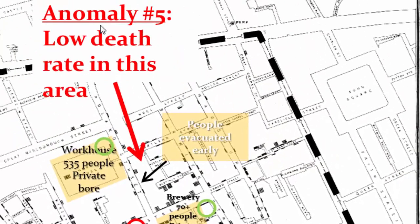Anomaly number 5: there was a low death rate in one particular area. Without fieldwork, he wouldn't have discovered that when the outbreak first occurred, this area had been pretty much evacuated — people just left. So there was really no one there to die of cholera. This is a really important lesson for study design, and it's why social researchers should always use strict data collection methodologies.